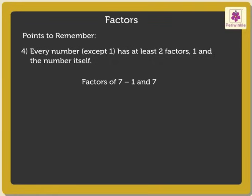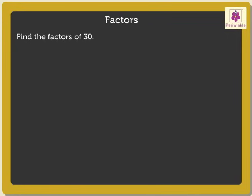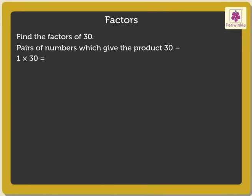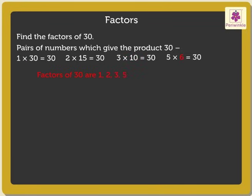Now, let us find the factors of one more number. Let us take the number 30. The pairs of numbers which give the product 30 are: 1 into 30 is equal to 30, 2 into 15 is equal to 30, 3 into 10 is equal to 30, 5 into 6 is equal to 30. Thus, the factors of 30 are 1, 2, 3, 5, 6, 10, 15 and 30.